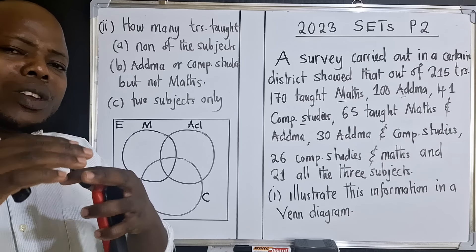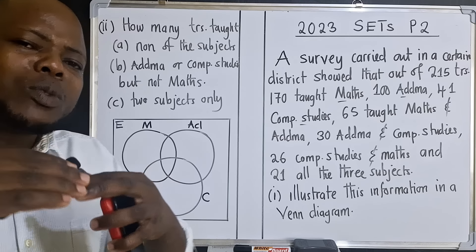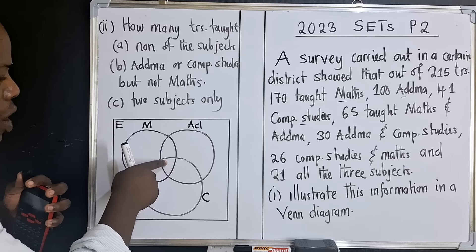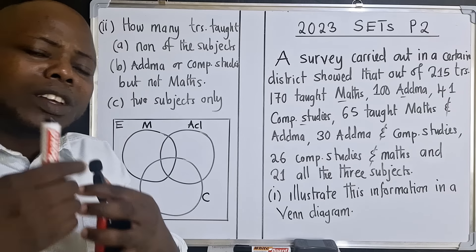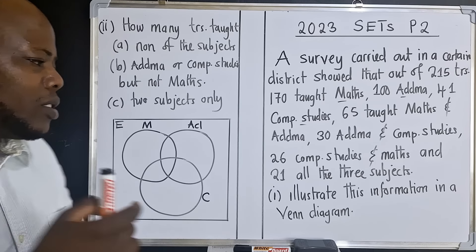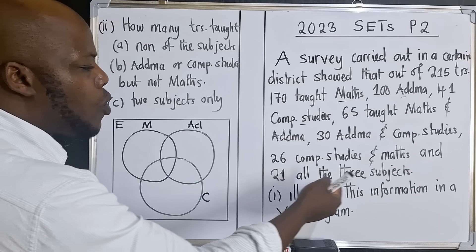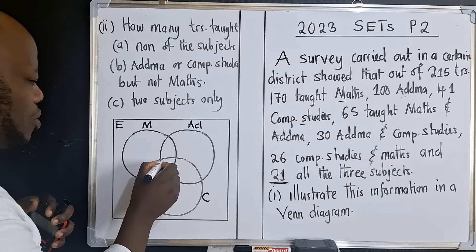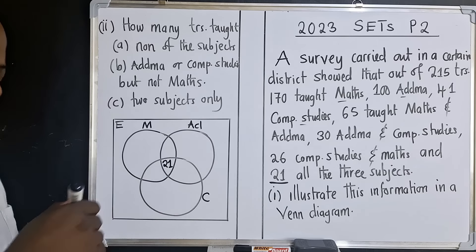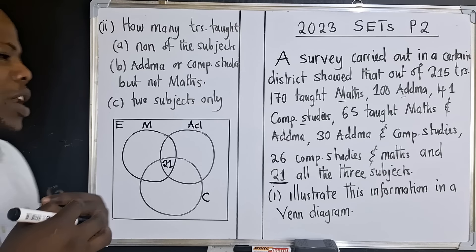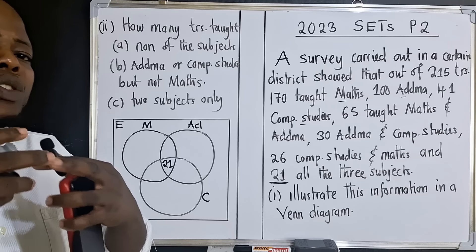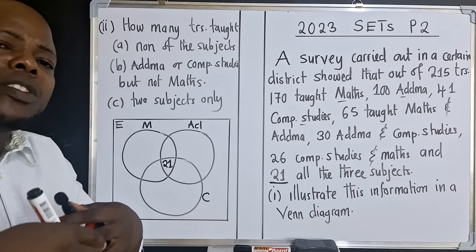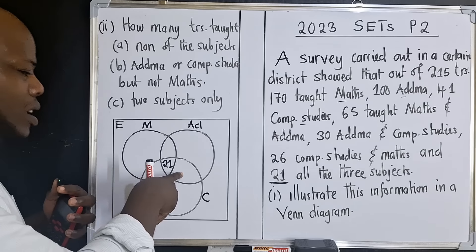Whenever you see a Venn diagram, always start with the intersection of all the sets — the region where all three circles meet. From the statement, 21 taught all three subjects, so this is the intersection of all three sets. We write 21 in the center region.